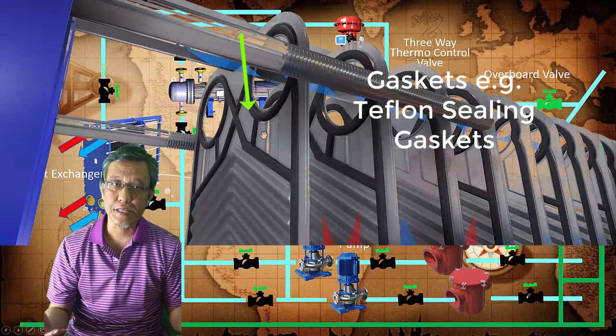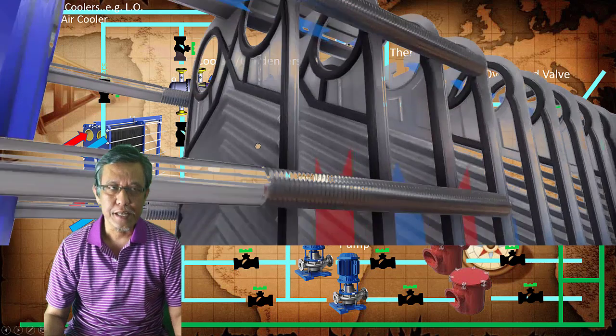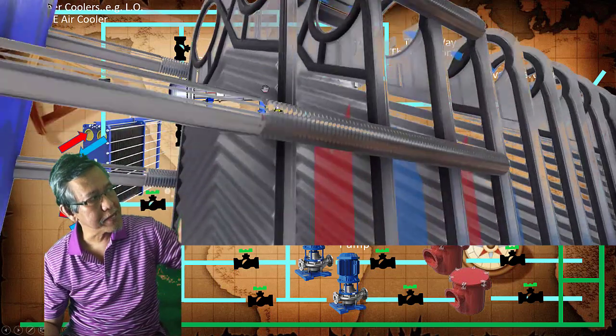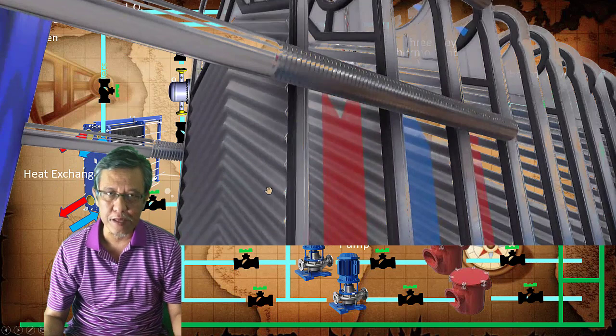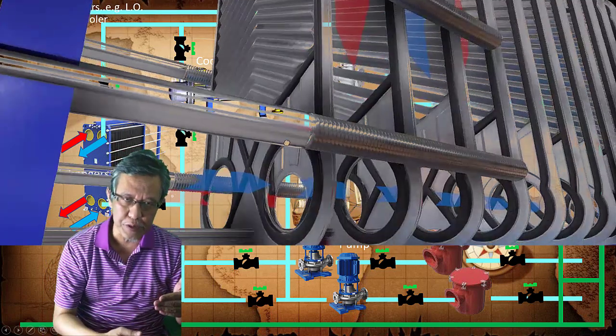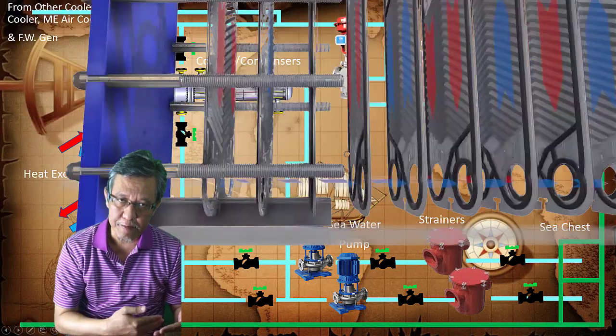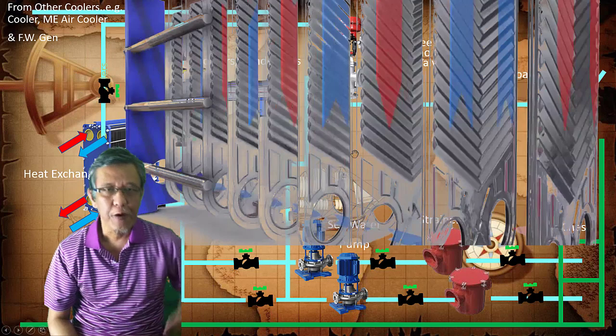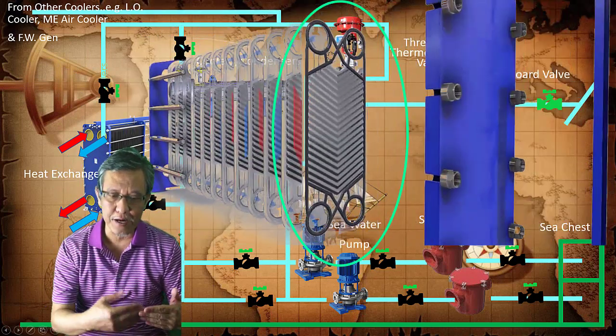If you look inside, there are these so-called gaskets. In most cases, the gasket that has been used is teflon. You'll be able to see that it's a complete rounded gasket all throughout the whole length of the plate.